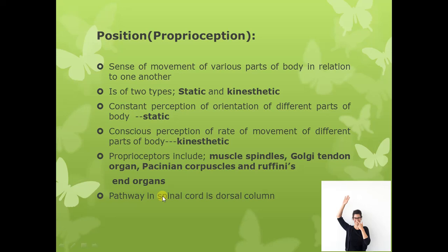Next is position sense. The sense of position is also known as proprioception. Proprioception or the position sense is the sense of movement of various parts of the body in relation to one another. Proprioception is of two types: static and kinesthetic.